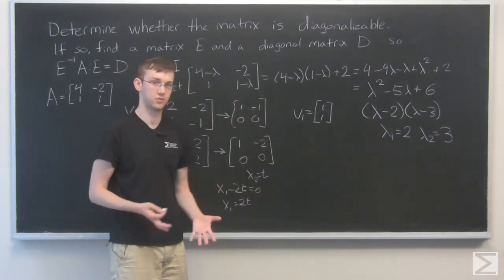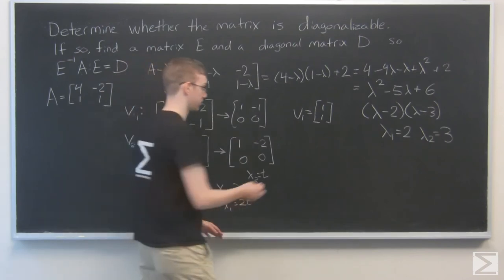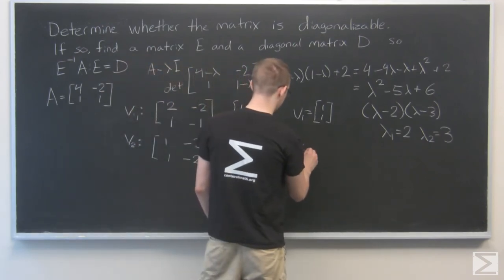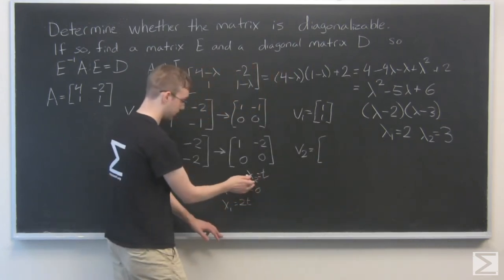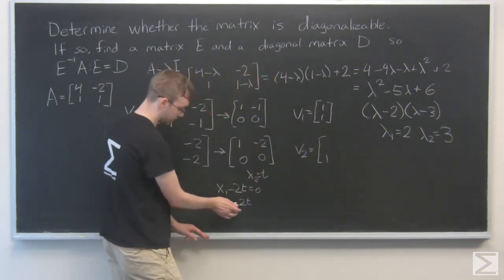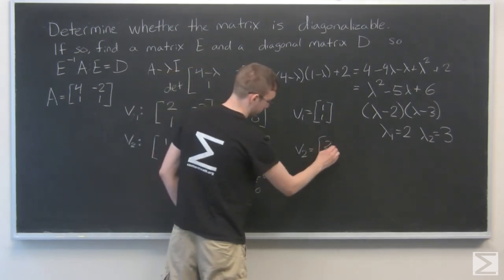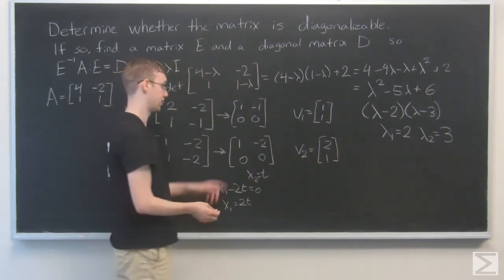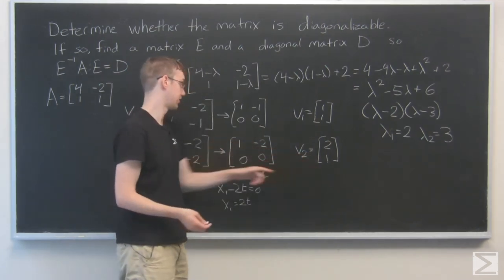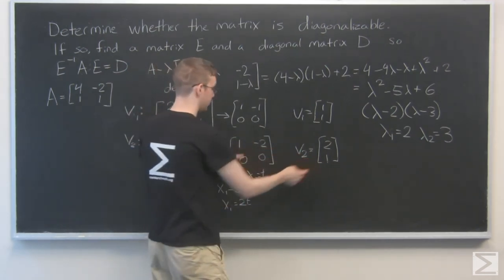And we'll just say that t is equal to 1, because for these eigenvectors, there are an infinite number of them. But if t is equal to 1, then our x2 is 1, our x1 is 2. That's just 2, 1. And again, you can see if we multiply this matrix by that vector, we get 2 minus 2 equal to 0.